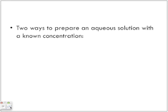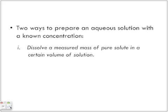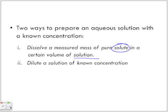So two ways to prepare an aqueous solution with a known concentration. One is to dissolve a measured mass of pure solute in a certain volume of solution. So we're going to take the amount of solute—remember the solute is what gets dissolved in a solvent to form the solution. And the other thing is to dilute a solution of known concentration by adding material to it, to weaken it to the desired concentration that we want.